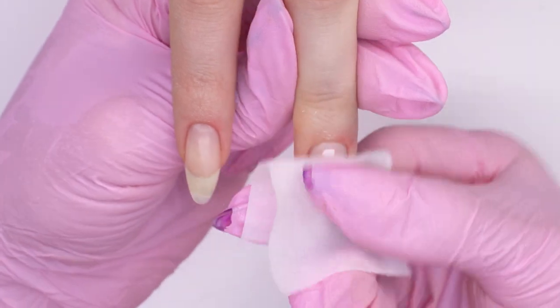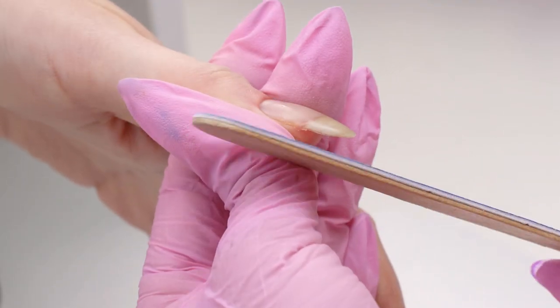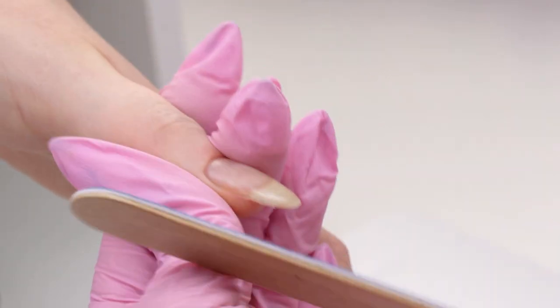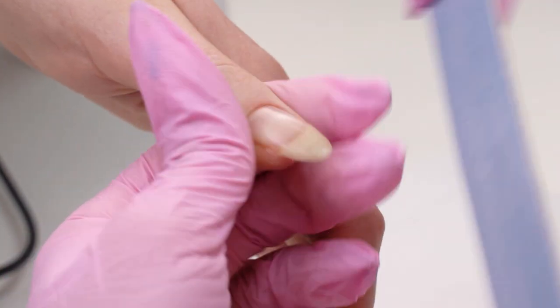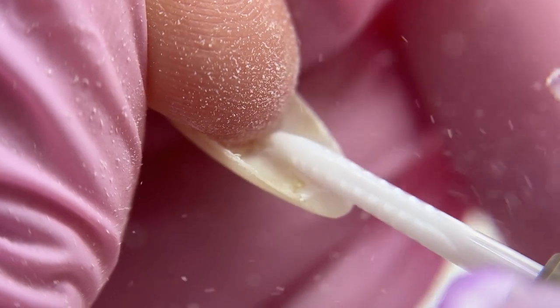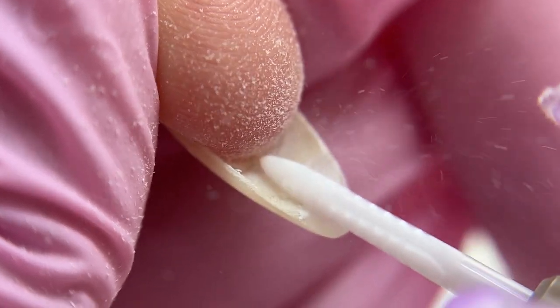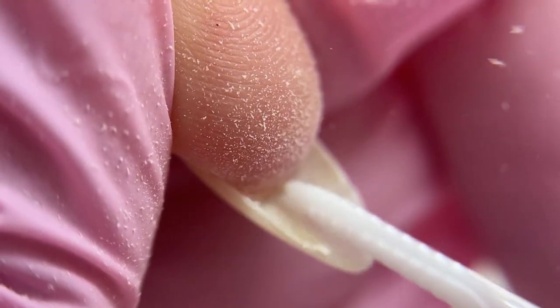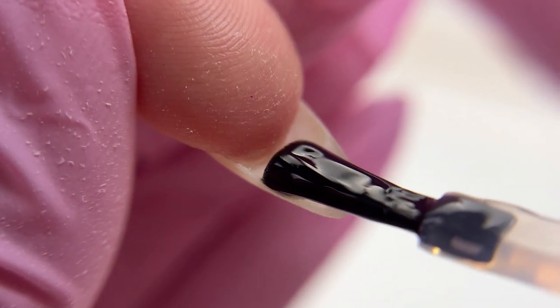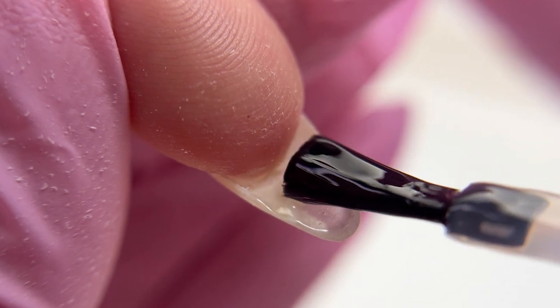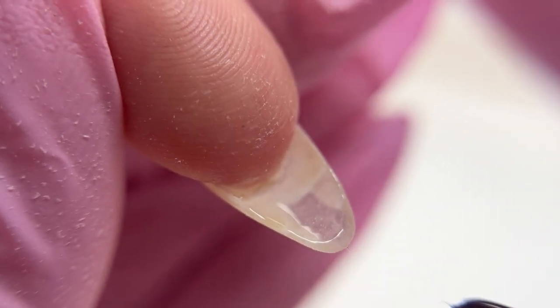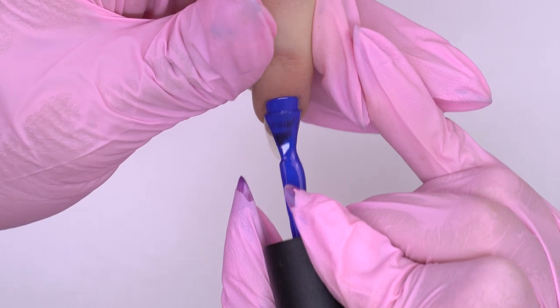I wipe off the tacky layer on the thumb and touch up the areas with the silk popping out. Since we have lifted up the curved tips, there is some extra thickness that we need to file out. I'm using a thin ceramic drill bit that does the job here. To keep the nail from peeling, I apply a thin base coat layer and send the hand to cure in the lamp like this.